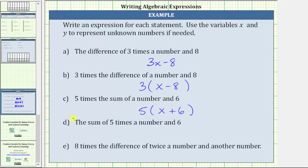For d, we have the sum of five times a number and six. We have a sum, but now it's a sum of five times a number — which is five x — and six. The expression is five x plus six.